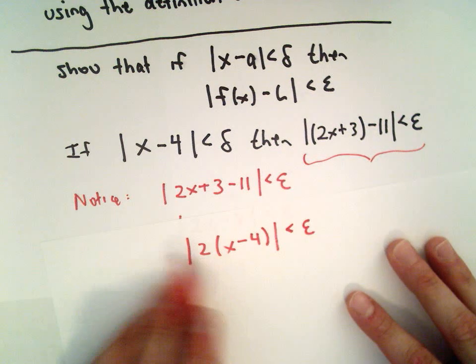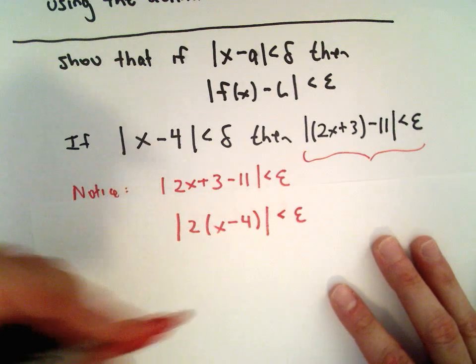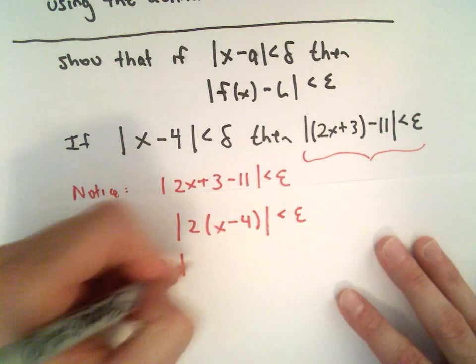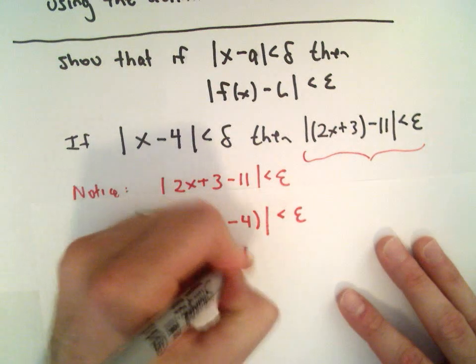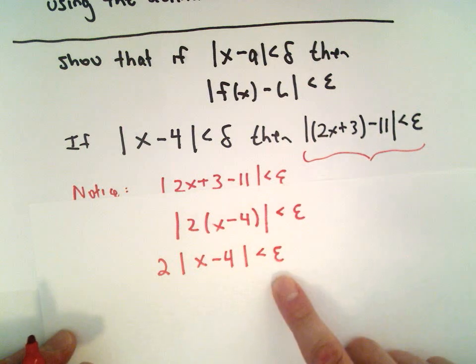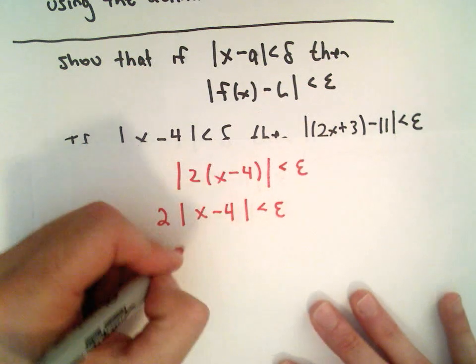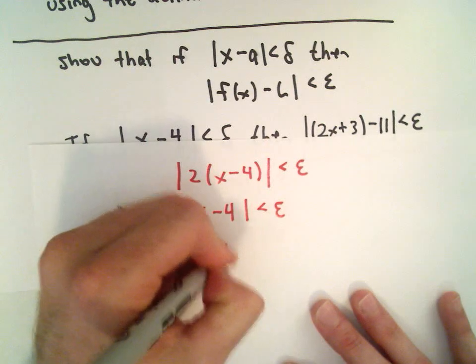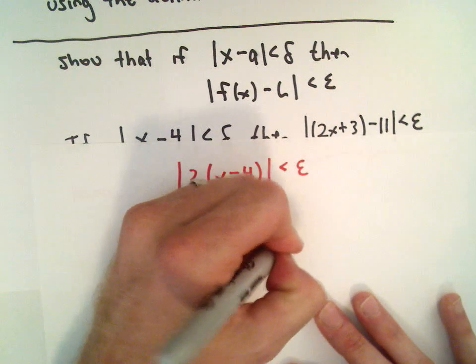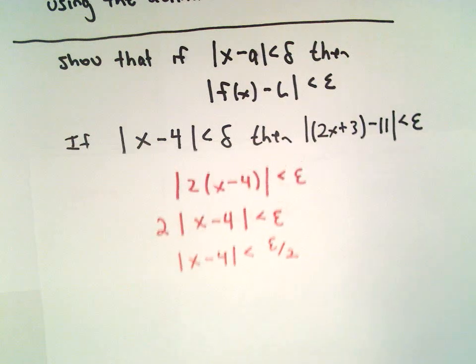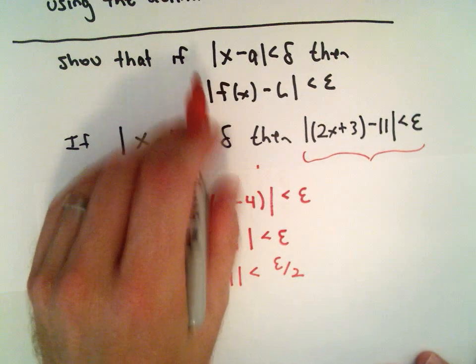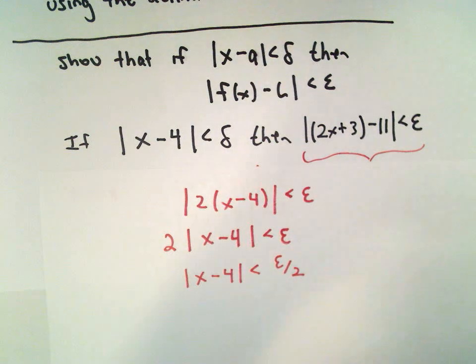Well I can factor the 2 out, I can take the absolute value of it, which is still just going to be 2. And now I can divide both sides of this expression by 2 and have the absolute value of x minus 4 less than epsilon over 2, and you could basically just reverse these steps and go right back up, and that's actually what I'm going to do.